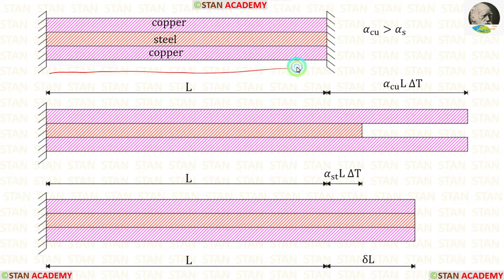In the first figure, the bars are restrained. So even if there is a temperature change, there will be no change in length. Suppose the bars are free to expand when the temperature rises. The copper bars will expand more than the steel bar because the alpha value for copper is higher than the alpha value for steel. The change in length due to temperature change in the copper bars is alpha Cu L delta T and in the steel bar is alpha St L delta T.